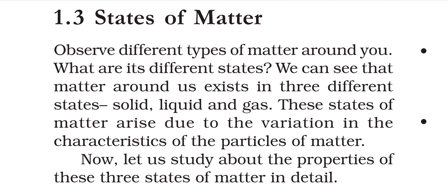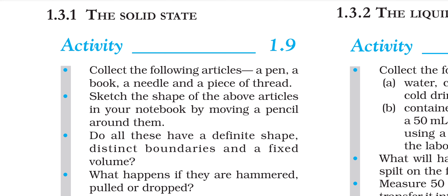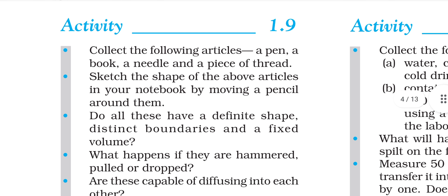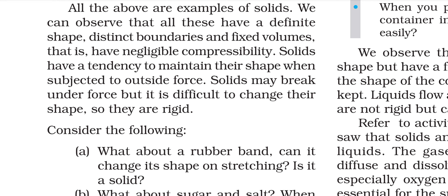Let's discuss the solid state first. Collect some materials like a pencil, a book, a piece of wood, and a piece of iron — these are examples of solids. When we observe the properties of these solids, we can notice that they have a definite shape, a fixed volume, and they are not easily deformed when we apply force or pressure on them. So solids have a definite shape, definite volume, and can resist applied force.